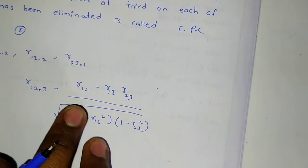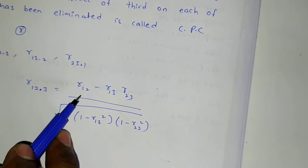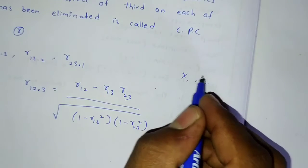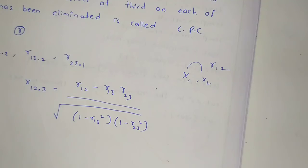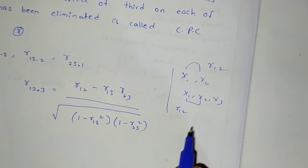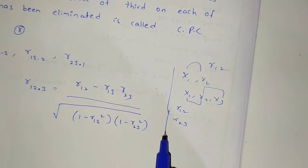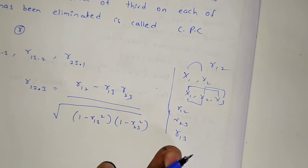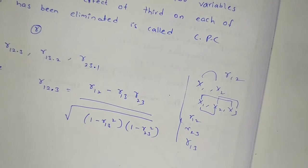In this formula, R12 is the correlation coefficient between variables x1 and x2. R23 is the correlation coefficient between x2 and x3. R13 is the correlation coefficient between x1 and x3. We substitute these correlation coefficients to get the partial correlation coefficient R123.